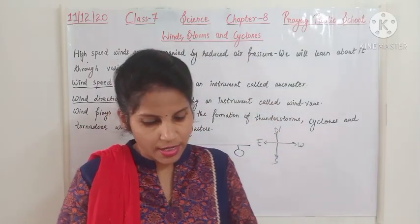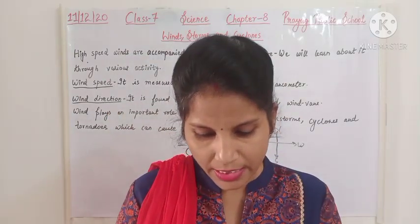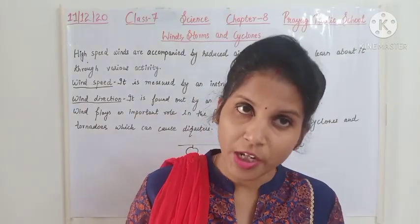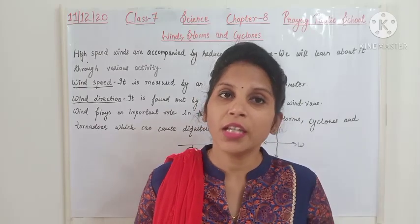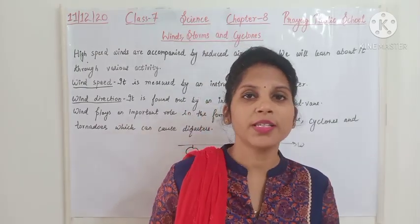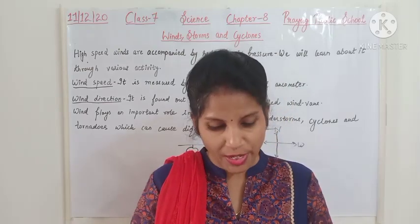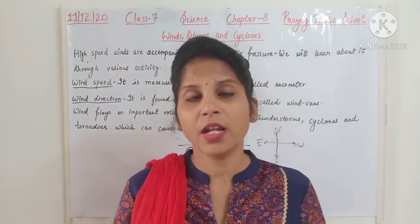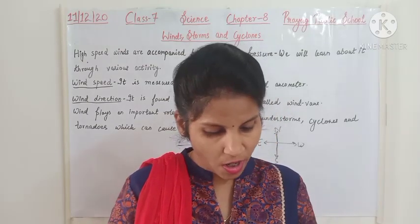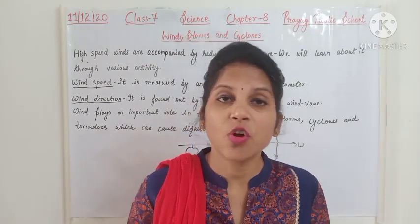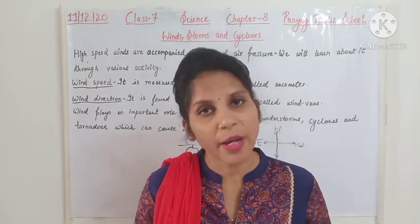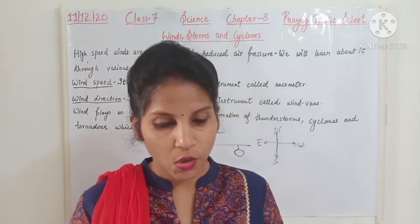A storm with thunder and lightning is called a thunderstorm — that means a storm where there is the rumbling of clouds and flashing of lightning. A thunderstorm is also accompanied by heavy rains and sometimes hail, meaning ice pellets may fall.